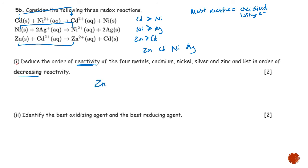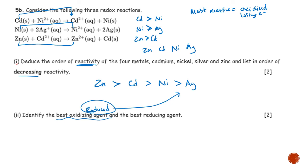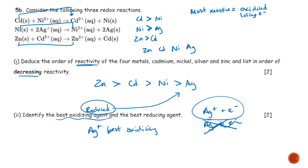Of these four metals, zinc is most reactive, then cadmium, then nickel, then silver — least reactive. The best oxidizing agent is the thing that is reduced most easily, which is our least reactive species: silver ion (Ag⁺) is the best oxidizing agent because it gains electrons most readily. Silver metal would not want to gain an electron, but silver ion is the best oxidizing agent.